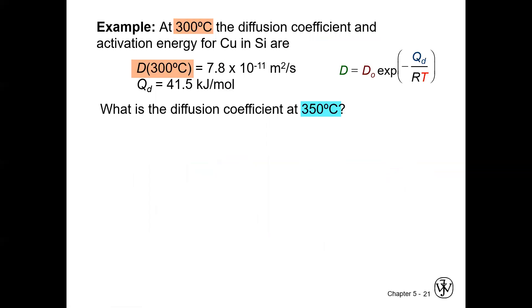All right. So let's look at a quick example. We have the activation energy given for diffusion case. We've also been given not the pre-exponential, but the diffusion coefficient, that's this one, at a particular temperature. And we'd like to know what the diffusion coefficient is at a different temperature, 350 degrees C.